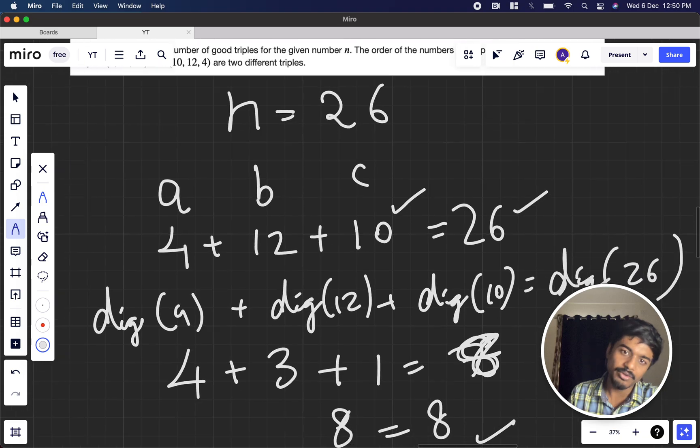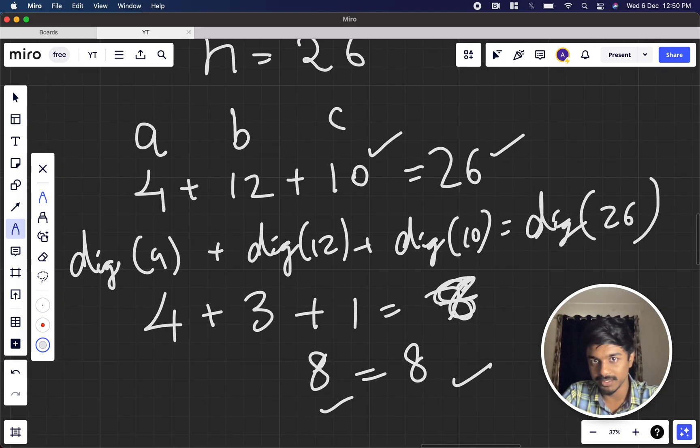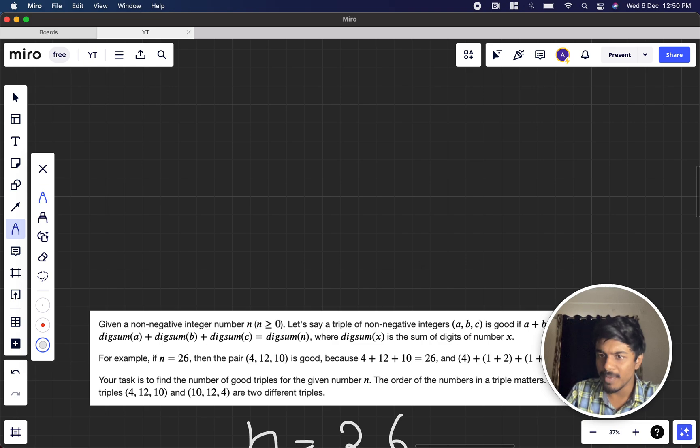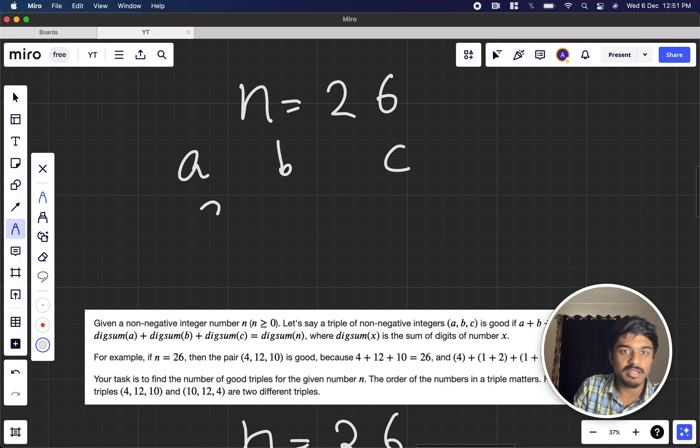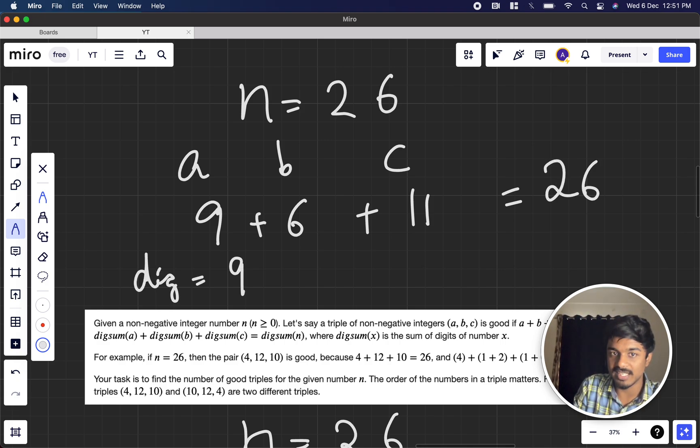Let's take some other number. It can be a bit more complex. Let's say n equals 26 and the values are 9, 6, and 11. So 9 plus 6 plus 11 equals 26. Now if I reduce it to digit sum, this is 9 plus 6 plus 1 plus 1, which becomes 2. And 2 plus 6 becomes 8.